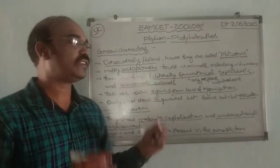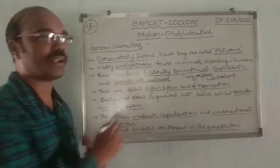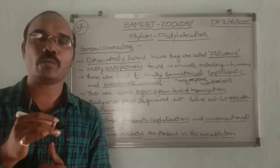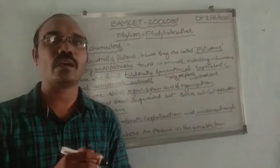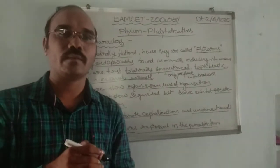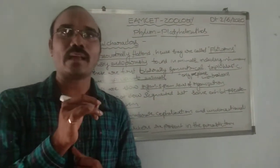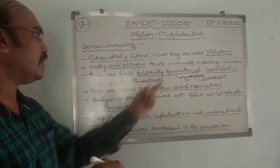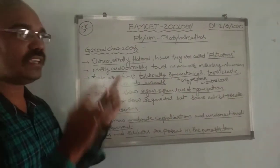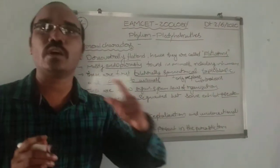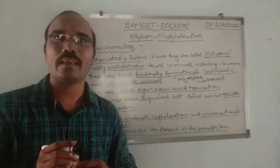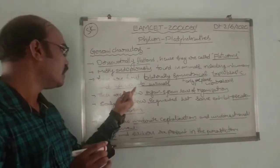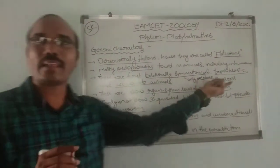These organisms survive mostly as endoparasites — surviving as endoparasites inside the human body and animals. These are the first organisms to show bilaterally symmetrical, diploblastic, and acoelomate characteristics.